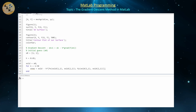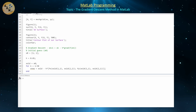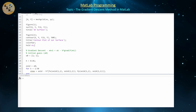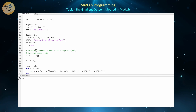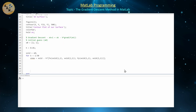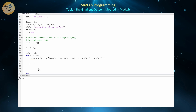Now we want to plot lines connecting the old and new points on our contour plot. Before that, let's put the hold on command above so our contour plot doesn't get cleared when we start plotting lines on top of it. Now that we know x_new, we still have both x_old and x_new simultaneously, so we can connect the old point and the new point with a line.